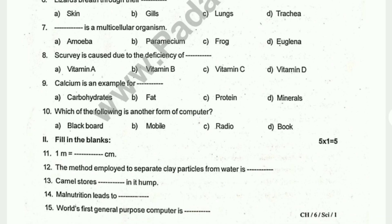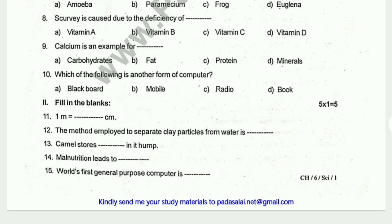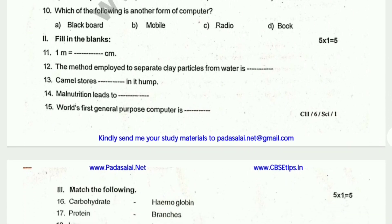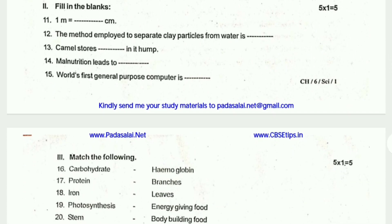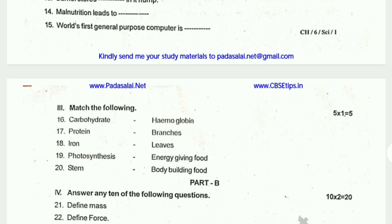Next, fill in the blanks — you have 5 questions. 1 meter is equal to ___ centimeter. The matter employed to separate clay particles from water is ___. World's first general purpose computer is ___. If you want to know the match, you have 5. If you want to know the answer correctly, you will match.